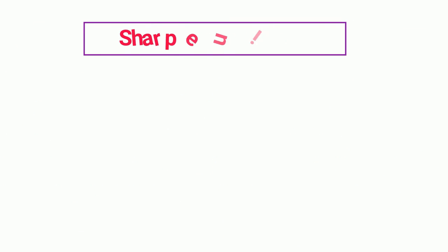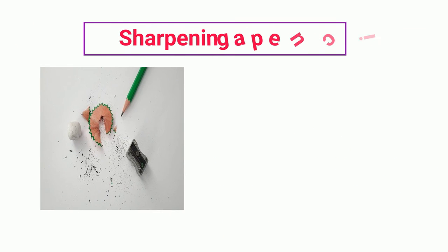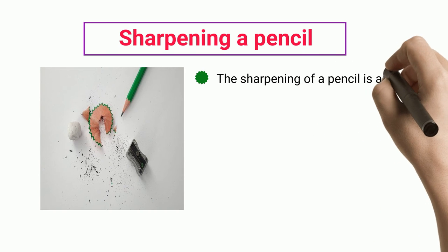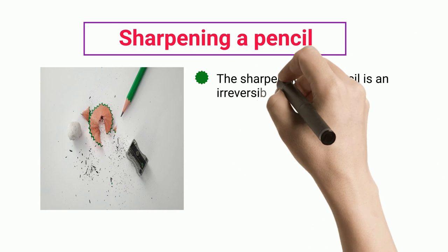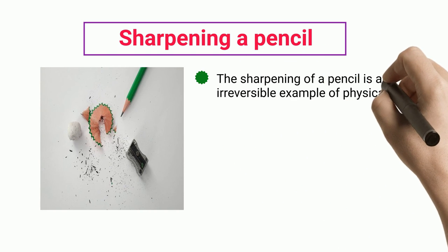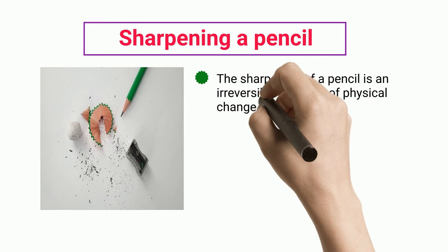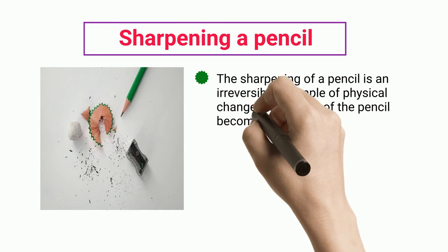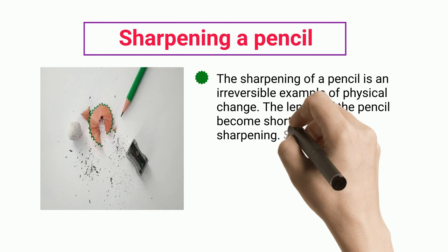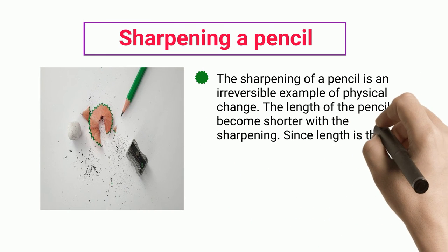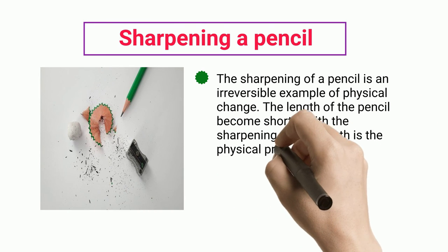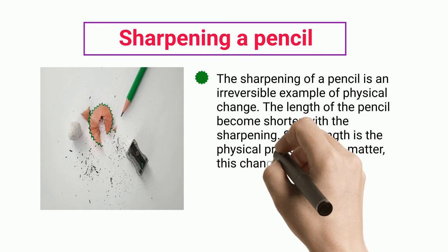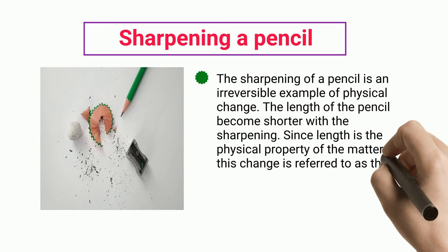Sharpening a pencil: sharpening a pencil is an irreversible example of physical change. The length of the pencil becomes shorter with sharpening. Since length is a physical property of matter, this change is referred to as a physical change.